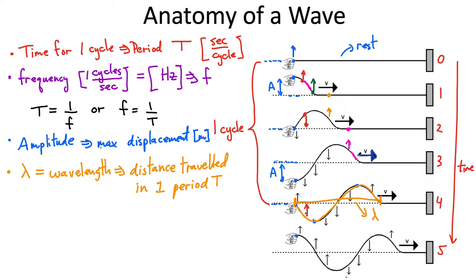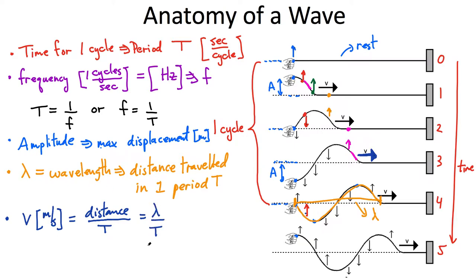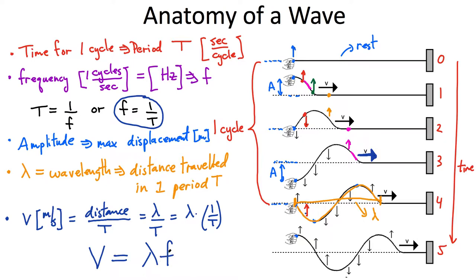The last really important quantity is the speed. V is the speed, measured in meters per second — basically the distance traveled by the wave in one period, which is the wavelength. So speed equals wavelength divided by the period. If you write this slightly differently, taking out the 1/T, that term in the bracket — one divided by the period — is exactly the definition of the frequency of the wave. So at the end of the day, you can write that the speed equals the wavelength multiplied by the frequency. This is a really important equation.